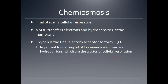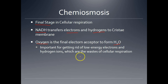Chemiosmosis is the final stage of cellular respiration. All of the NADHs and FADH2s produced throughout cell respiration transfer electrons and hydrogens to the cristae membrane. Oxygen is the final electron acceptor — it accepts the electrons and hydrogen ions to form water, which is released to rid the cell of these low energy electrons and hydrogen ions. Water is one of the waste gases of cellular respiration — in vapor form. The other waste gas is carbon dioxide.